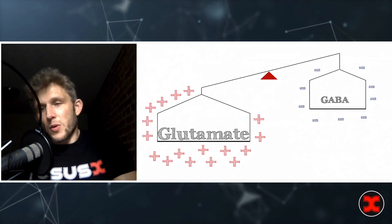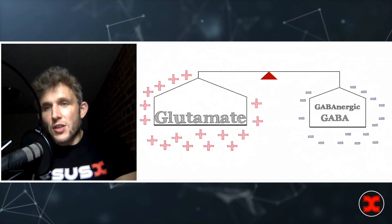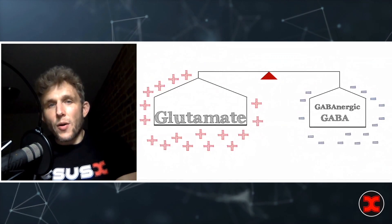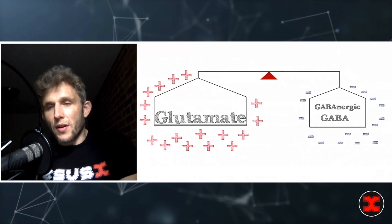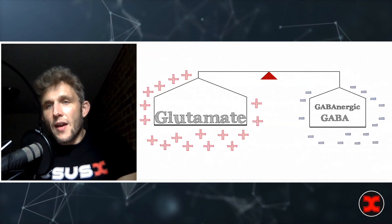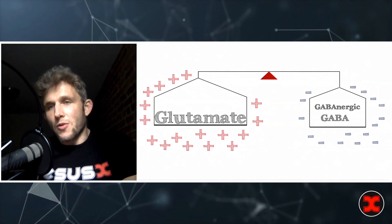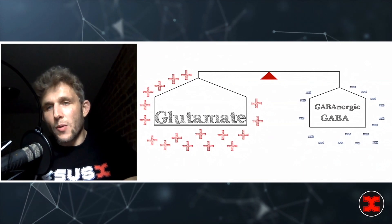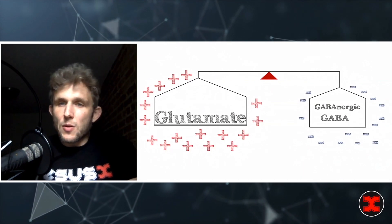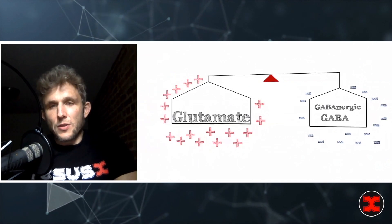To treat alcohol withdrawal, we use some kind of GABAergic agent, which levels out the excitatory-inhibitory imbalance. Today we're going to talk about how we think about these GABAergic agents, how we select them, and why phenobarbital is an optimal agent.